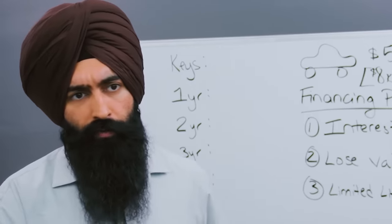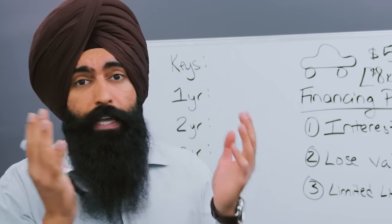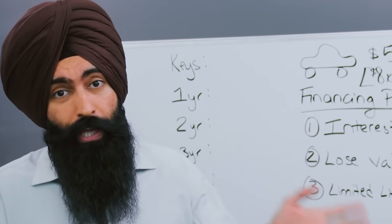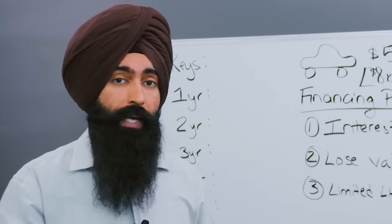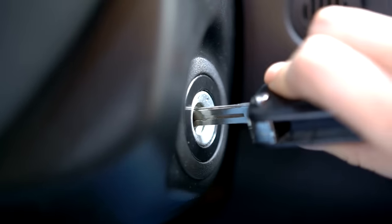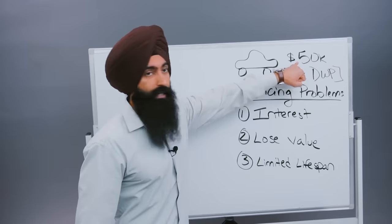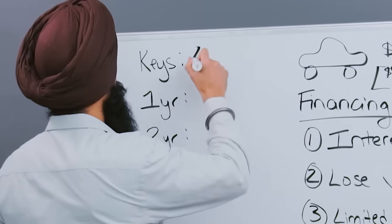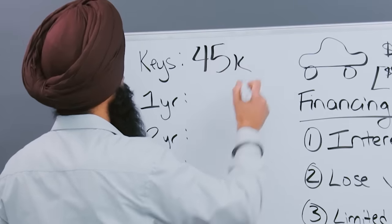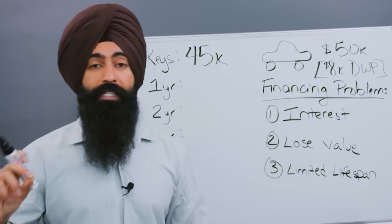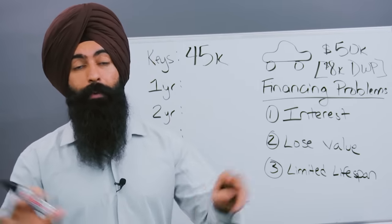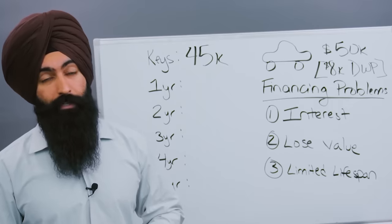The problem with something like your car versus something like a piece of real estate is that you know this car is going to lose value, especially if you're buying this car new. So as soon as you go to the lot and you put your keys in the ignition, that car is immediately going to lose value from $50,000, it's going to drop down to around $45,000 the minute you put the keys in the ignition and you sign the paperwork. You bought the car and you immediately lose $5,000 in value.